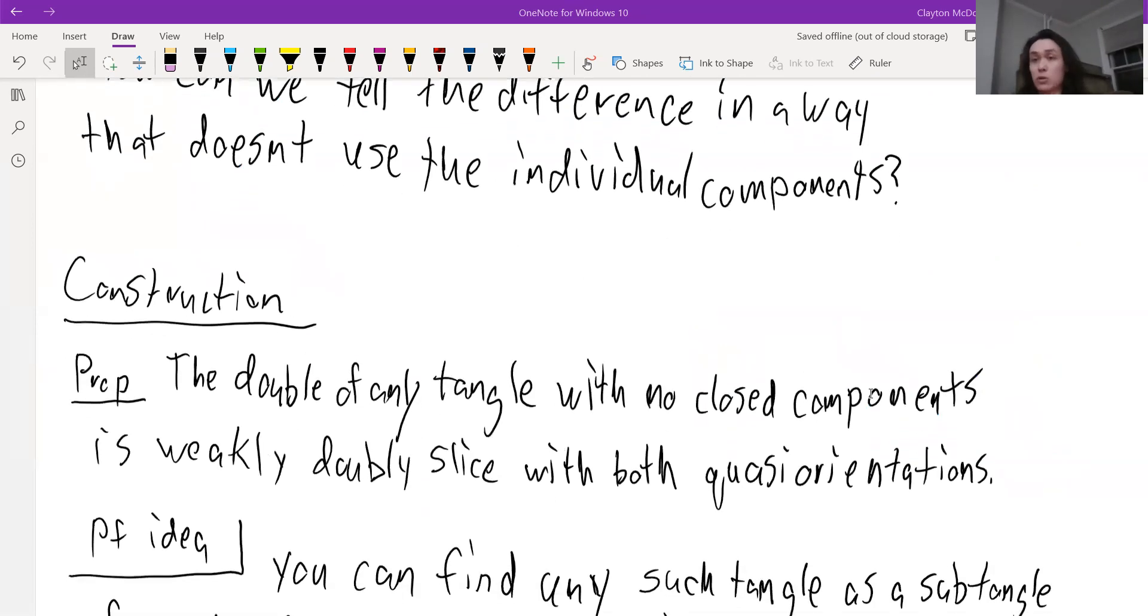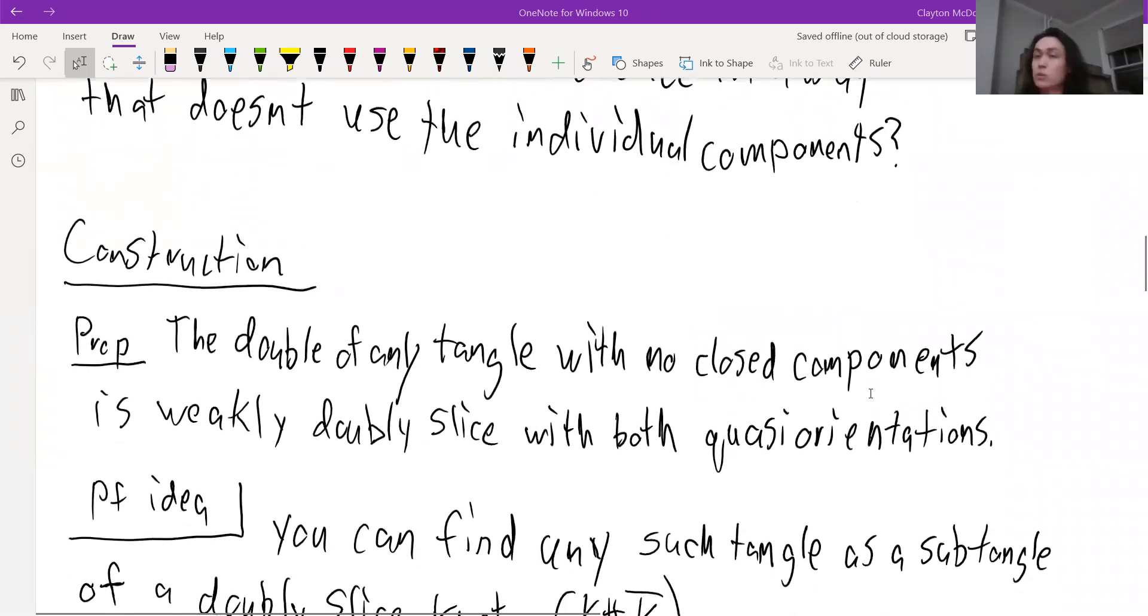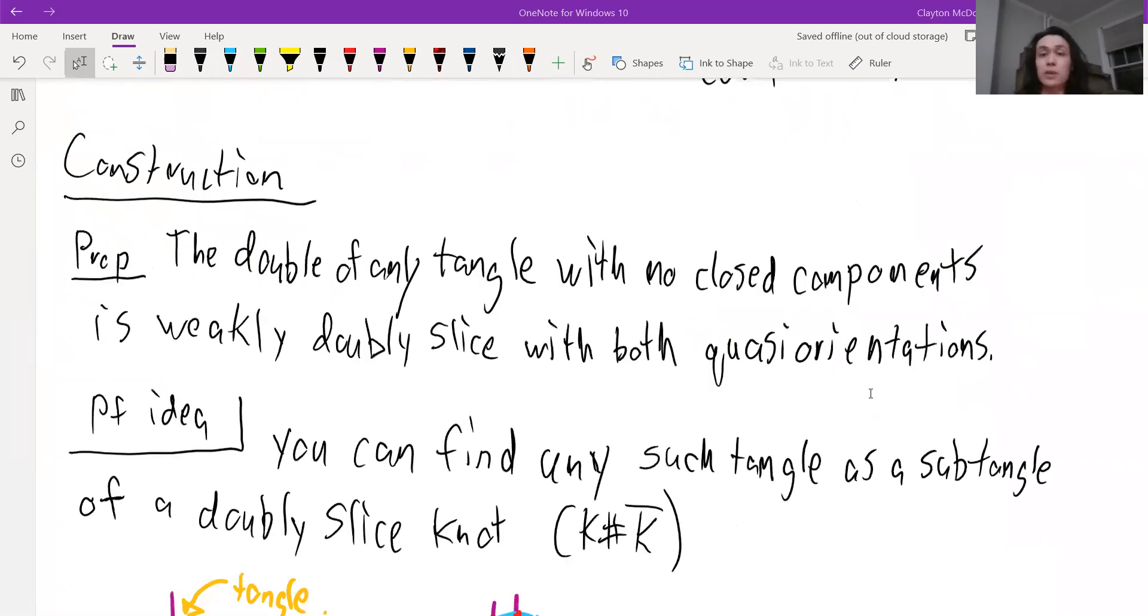Well, we'll need a construction and we'll need an obstruction. So first, let's go over the construction. The double of any tangle with no closed components is weakly doubly slice with both quasi-orientations.